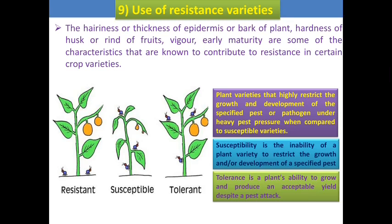The next is the use of resistant varieties. Many resistant varieties have already been developed in particular crops against particular pests. These varieties have morphological or biochemical characters that restrict the pest population. Characteristics present in resistant cultivars include hairiness or thickness of epidermis, bark of plant, hardiness of husk, rind of fruits, vigor, and early maturity — all contributing to resistance in certain crop varieties.